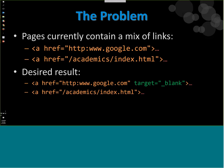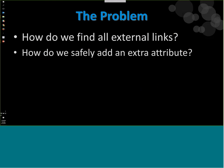We basically just want to add target equals underscore blank to the link. The main questions are: how do we find all the external links scattered throughout the site, and how do we affect only the ones that are external? Secondly, how do we add an extra attribute — what if there are already other attributes like a title attribute, or what if there's already a target attribute? With simple text there's just no way to know all the possible different URLs, so this is definitely a case where regex would be required.